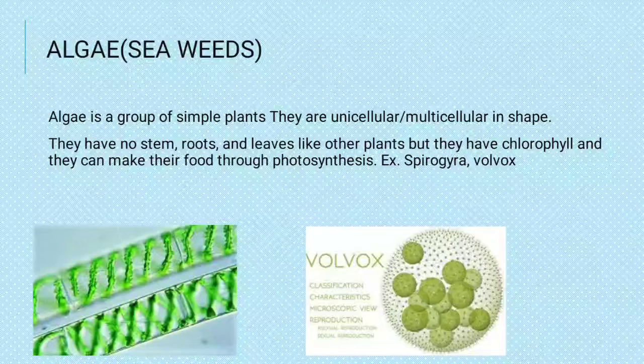Now we will move to the next microorganism: algae. Algae are also called sea weeds. You might have seen algae on standing water — green plant-like growths. They don't have stem, branches, or leaves, but they contain chlorophyll, and with this chlorophyll they make their own food through photosynthesis. Examples of algae are Spirogyra and Volvox.